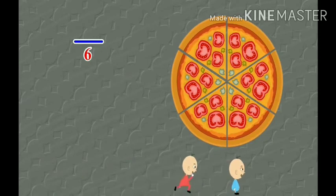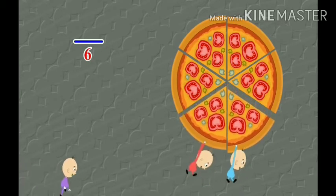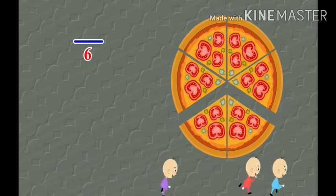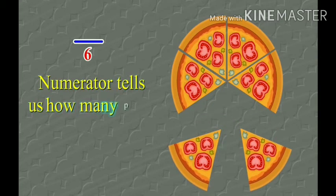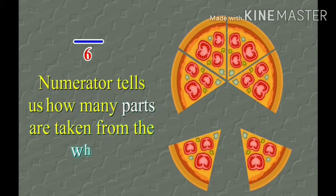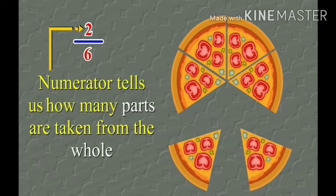Now I will tell you about the numerator. If we take two parts from the whole, those two parts are represented by the numerator. The numerator tells us how many parts are taken from the whole. So if two parts are taken, then two is the numerator and six is the denominator.